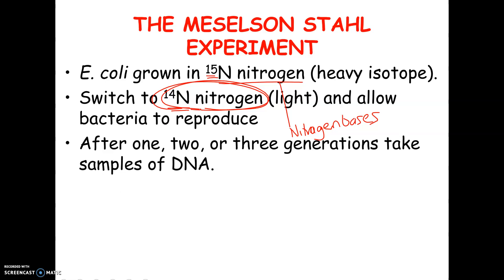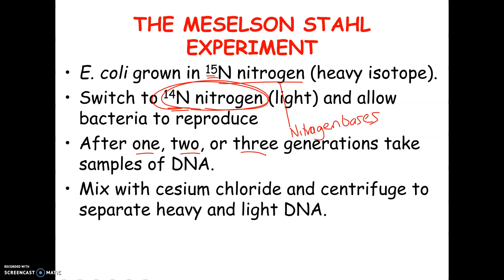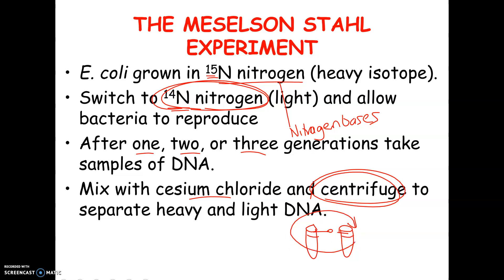After a couple of generations — stopping after one, two, and three generations — they took DNA samples, broke up the bacteria, extracted the DNA, and mixed it with cesium chloride. Then they centrifuged it. A centrifuge is a machine where you put samples in, spin them in a circle, and the heavier something is, the further down it sinks. For example, you can separate blood with a centrifuge — red blood cells end up at the bottom because they're heavy, then a layer of white blood cells, then the plasma on top. The heaviest stuff sinks to the bottom and you get distinct layers.